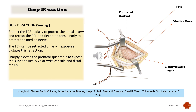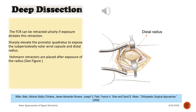The FCR can be retracted ulnarly if exposure dictates this retraction. Sharply elevate the pronator quadratus to expose the subperiosteal volar wrist capsule and distal radius. Common retractors are placed after exposure of the radius.